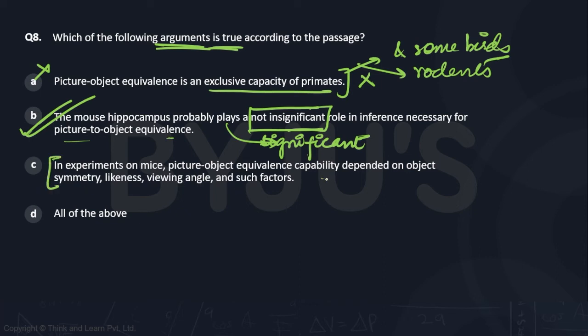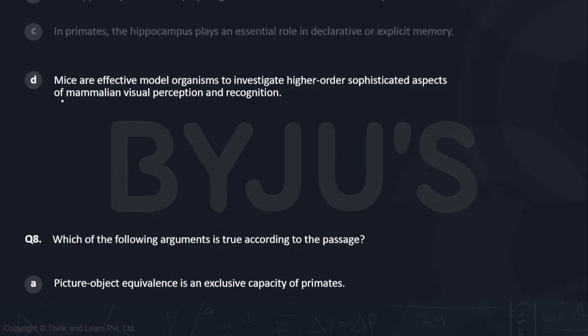C is untrue. C is false as per the passage. Because the passage says that this capability existed irrespective of these factors. Irrespective. D of course eliminated. B is the answer.